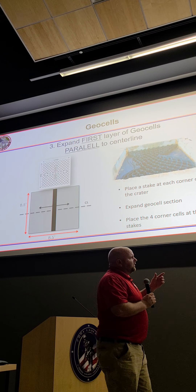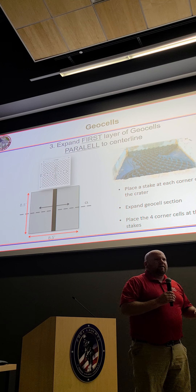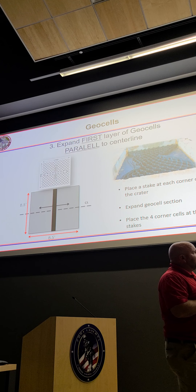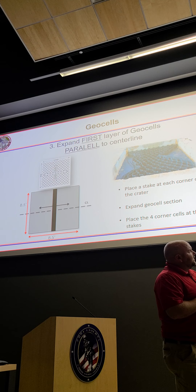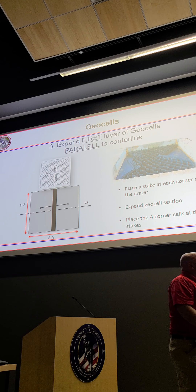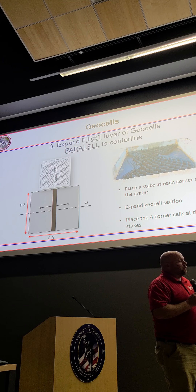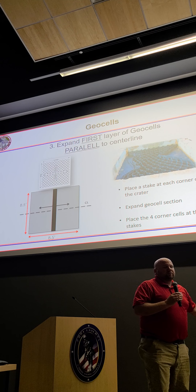The first layer of GSLs — this is important. You want to make sure the configuration is correct to maximize the life of your repair. You want to expand parallel to the centerline of the runway. Traffic's going this way, so you want to expand in that same direction parallel to the centerline. Once you've got it in the hole, place a stake in each corner, expand it, and place your stakes in the four corners to make sure it's fully expanded within the repair.